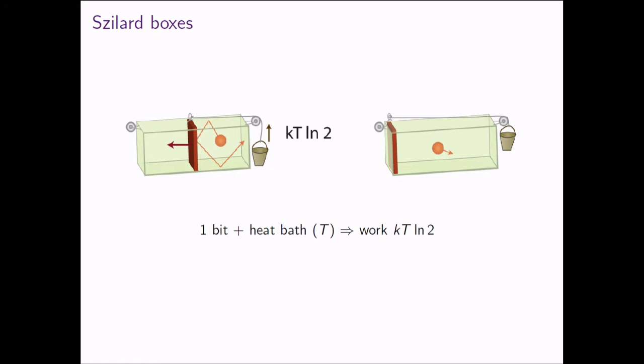Szilard boxes are a very simple toy model. The idea: you have one bit of information encoded in a box with a partition in the middle, with a particle on one of the two sides, surrounded by a heat bath at some temperature. If you know where the particle is, you can attach a little bucket with some mass; as the gas expands, if you integrate how much it expands, it gives you kT log 2 of work. So you end up with a lifted mass — stored work.